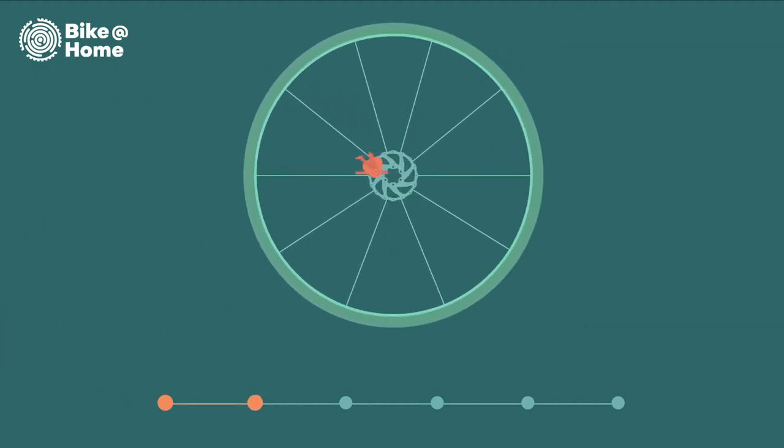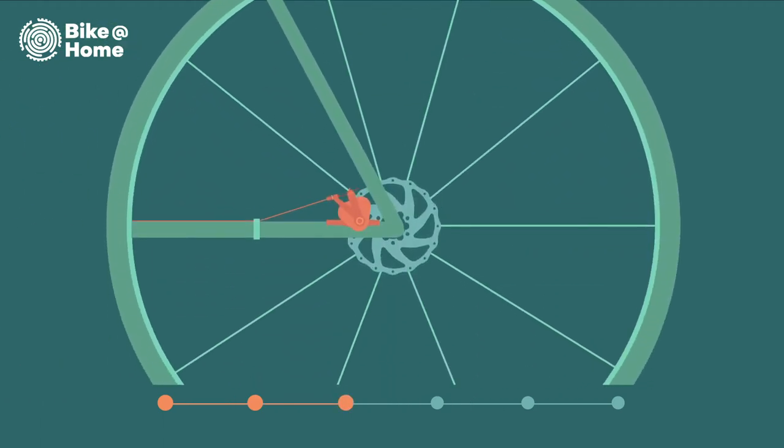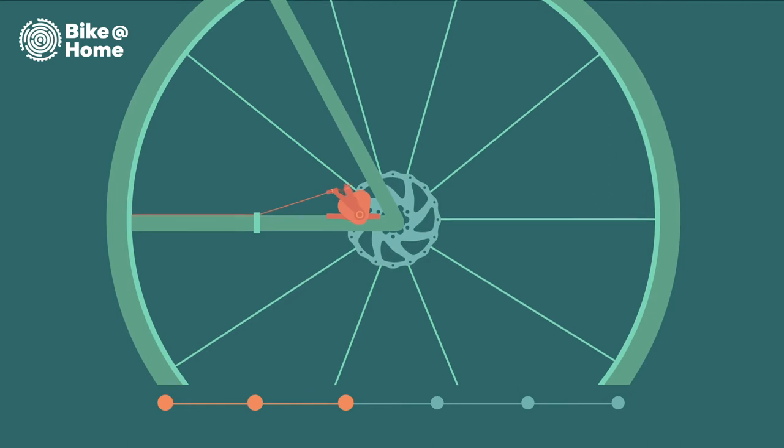To adjust your mechanical disc brake, your wheel must be clear of the ground. You can tell from the amount of slack on the cable that the brake needs to be adjusted.